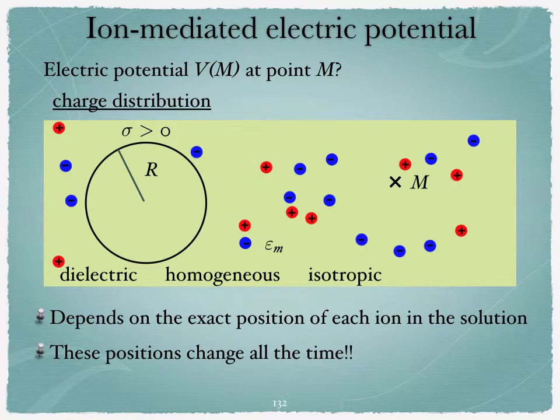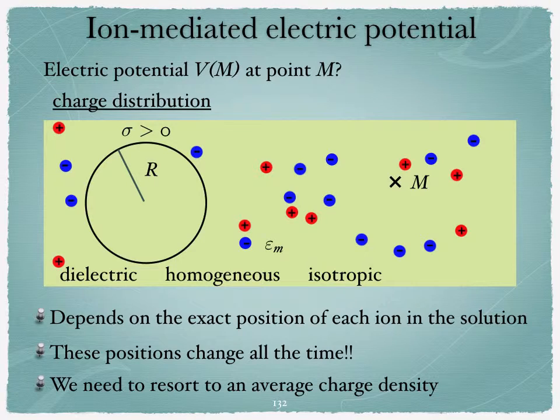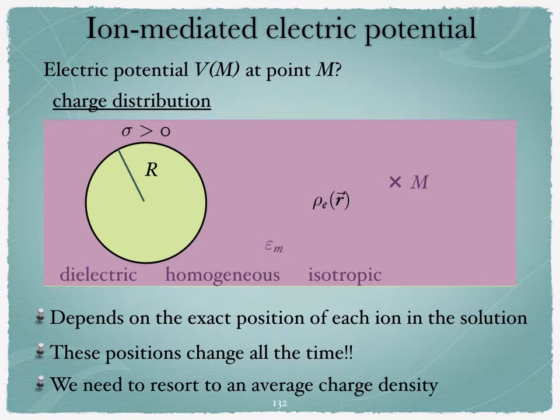We have to do something very similar to what we have done for van der Waals interaction. We need to average over all the possible configurations of the charges in order to get an average charge density in solution and around the colloid. And the way we do that is by representing a smeared density of charge corresponding to the ions, which I'll call rho E for electric charge at a given point r.